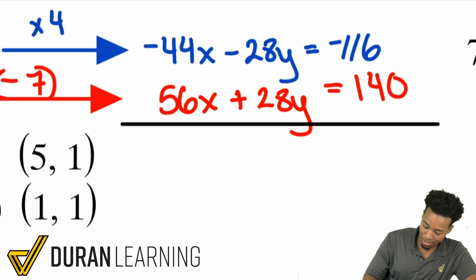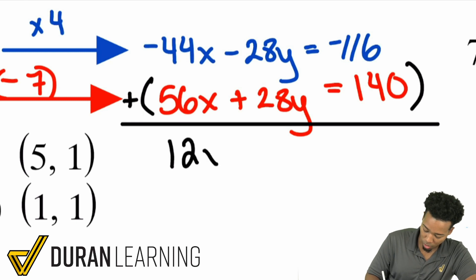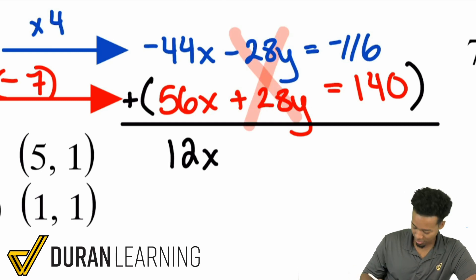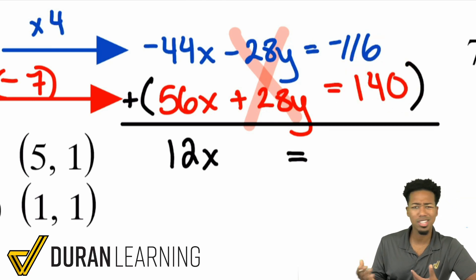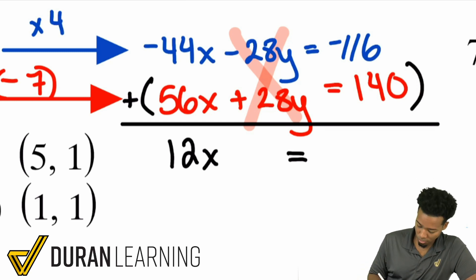So, I'm going to go ahead and add these equations together. We have ourselves negative 44x plus 56x. Add these, that will be positive 12x. Over here, that's going to eliminate. That's exactly what we wanted. So that's gone. And then we have ourselves negative 116 plus 140, which is the same thing as 140 minus 116. So, that'll be the same thing as 40 minus 16. So, 24, positive 24.